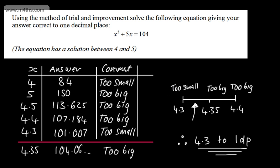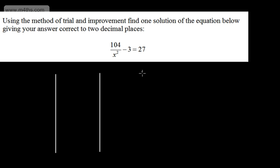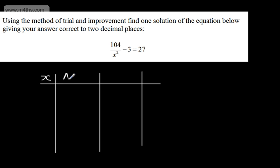Let's now look at a slightly more challenging question. This one says, using the method of trial and improvement, find one solution of the equation below, giving your answer correct to two decimal places. This time we're going to two decimal places and we're not given a starting value. If you're unsure, just think of some numbers to try. I think I'm going to try 2 and 1 — an educated guess.